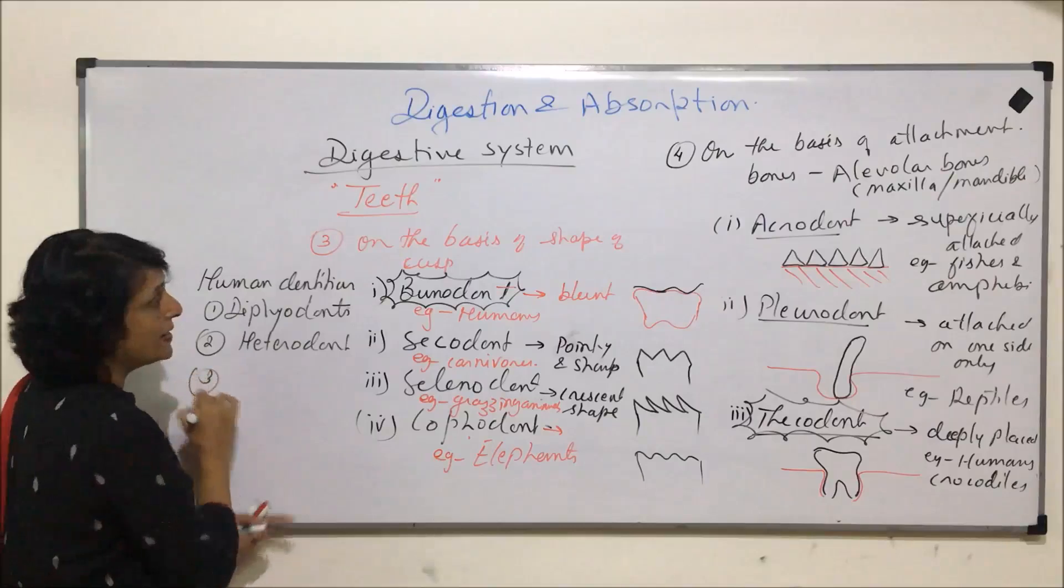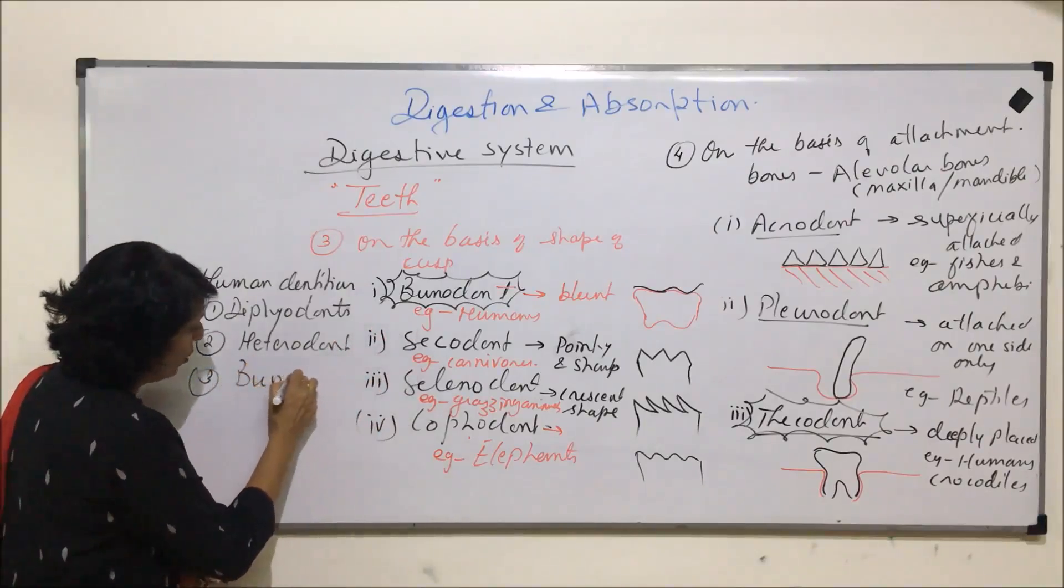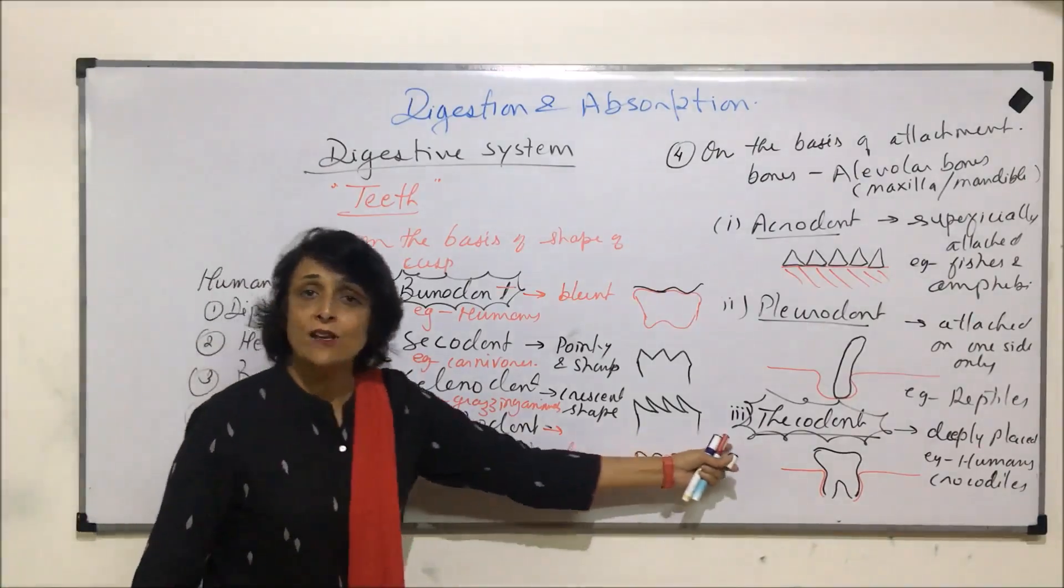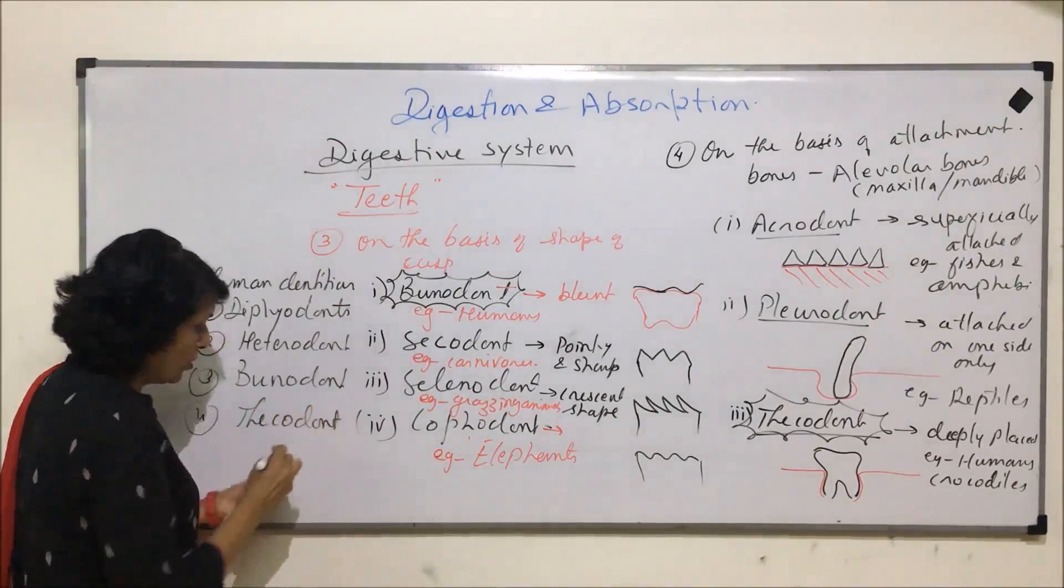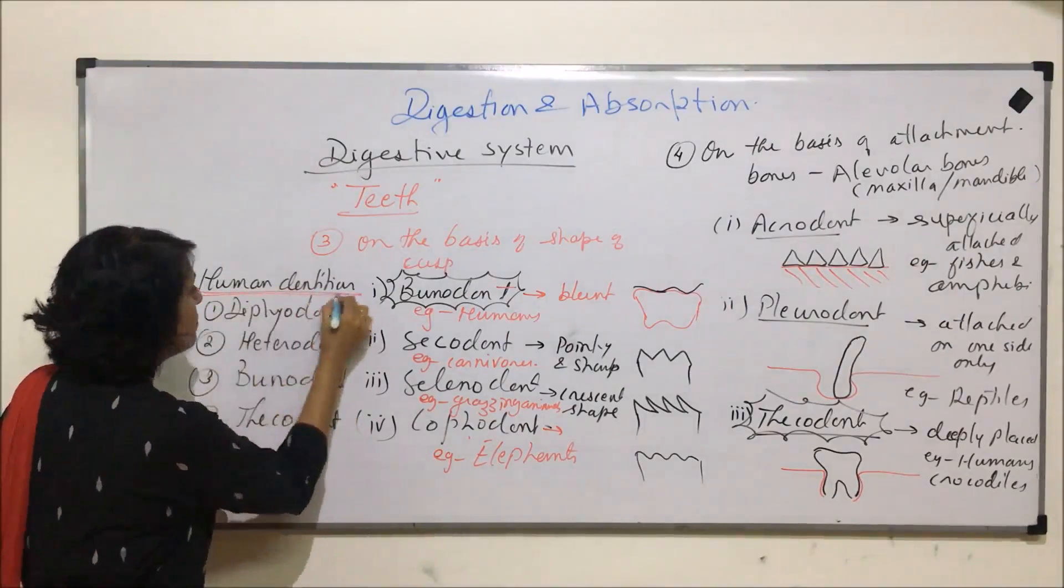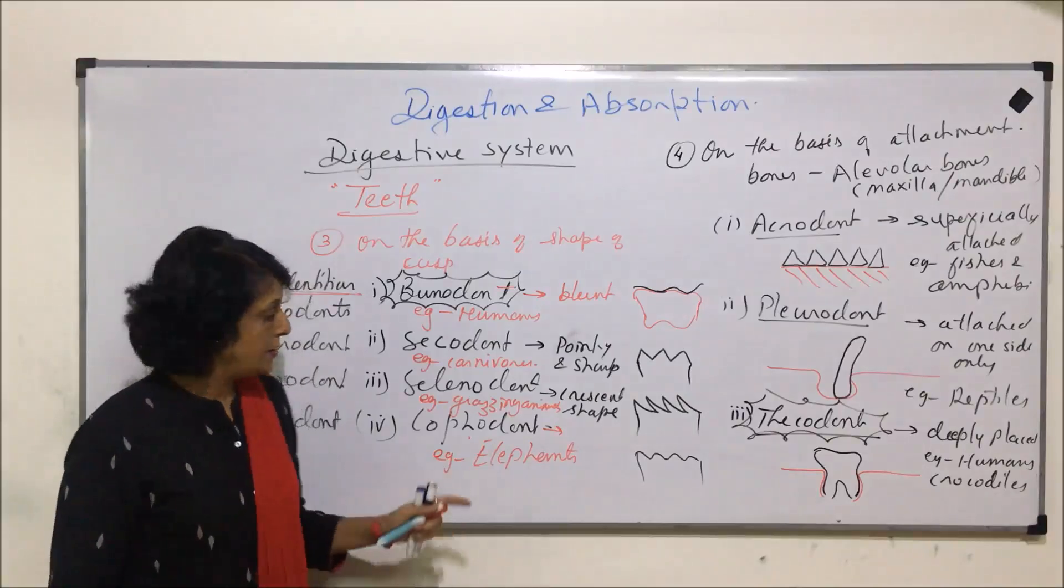On the basis of shape of the cusp, we are bunodont. And fourth, on the basis of attachment, we come in the category of thicodont. So these four things are for explaining what kind of dentition is found in human beings.